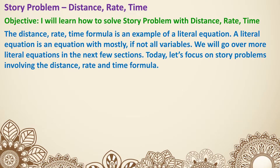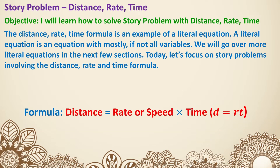The distance, rate, time formula is an example of a little equation, and we're going to learn more about that in the next few lessons. Let's have a look at the formula. Distance equals rate or speed — rate and speed in this situation mean the same — multiplied by time. In short, it is D equals R times T. R stands for rate or speed, T stands for time.